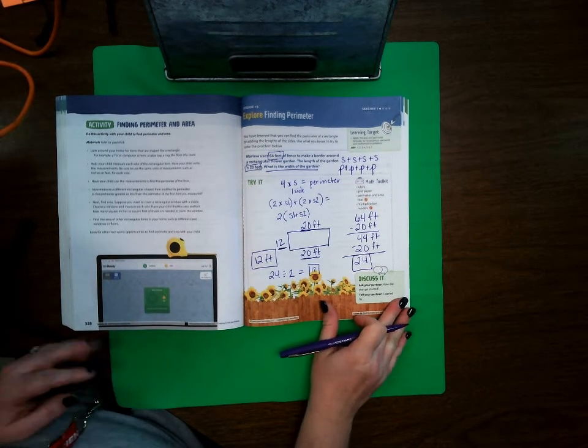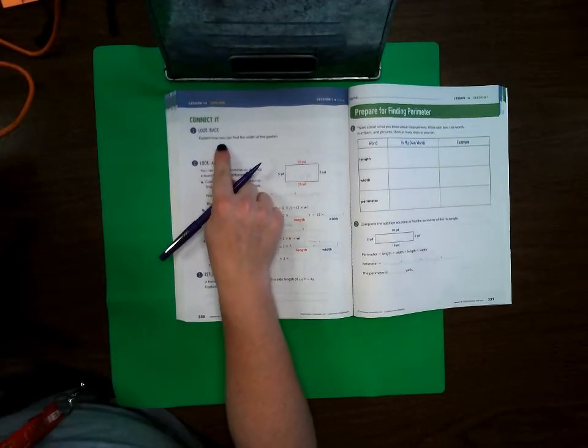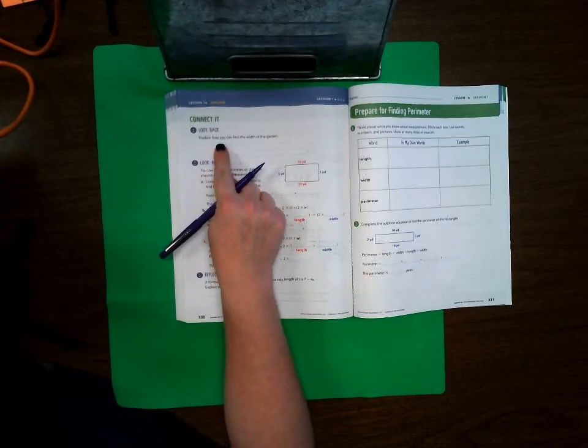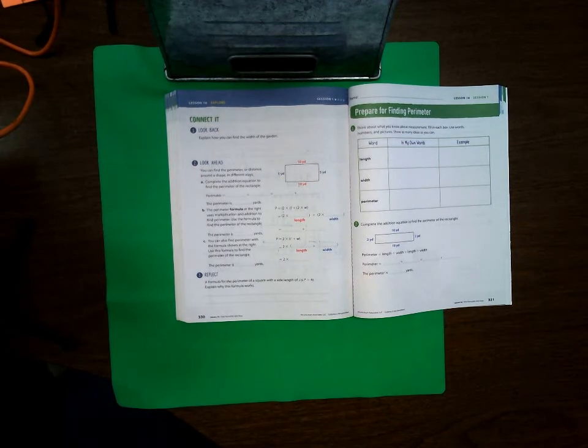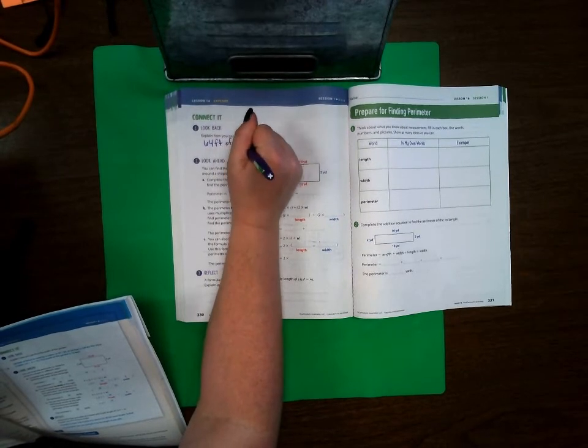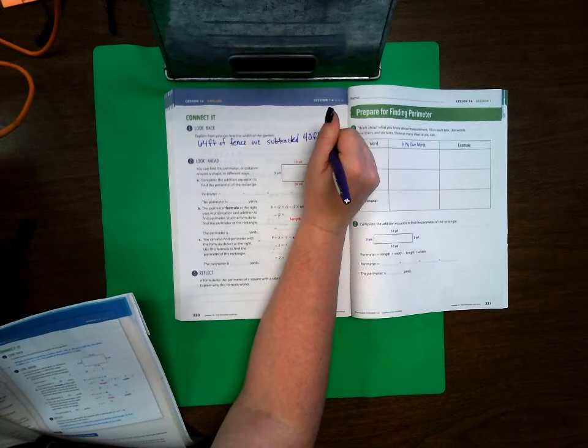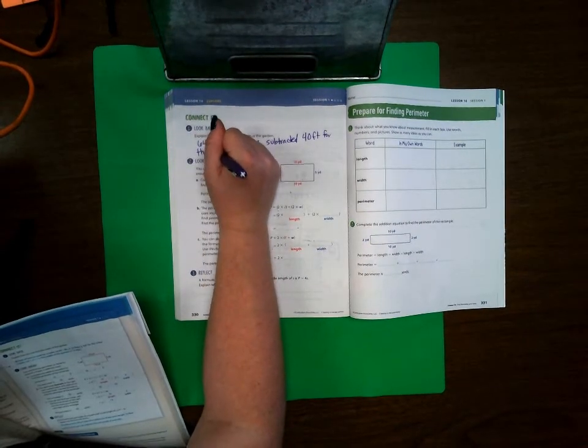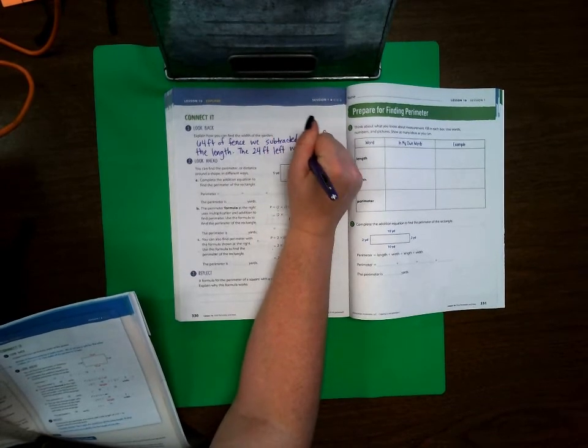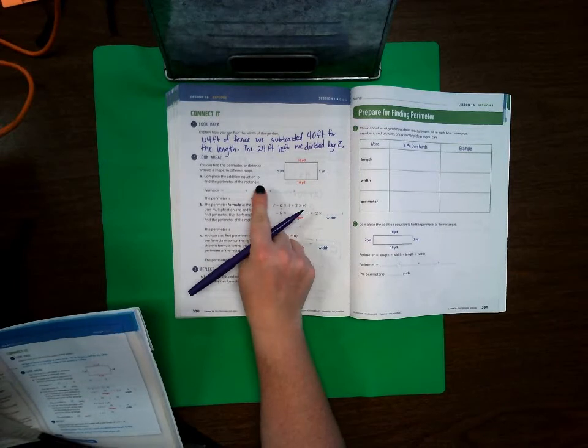Okay, let's go ahead and go on to page 330. On page 330 it says look back, explain how you can find the width of the garden. Well, what we did is we took the 64 feet of fence, or I'm sorry, 64 feet of fence, and we subtracted 40 feet for the length.